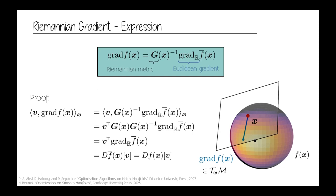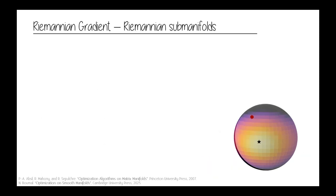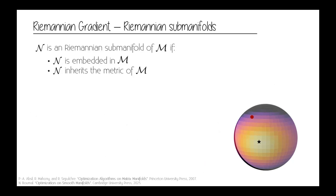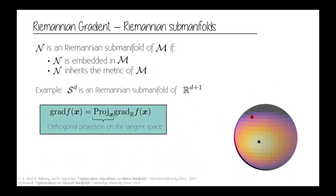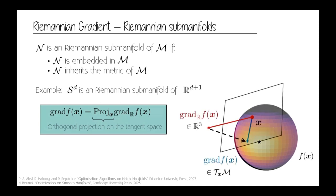There is one case where computing the gradient is even simpler: Riemannian submanifolds. These are manifolds embedded in another Riemannian manifold, inheriting the ambient metric — for example the sphere S^2 embedded in R^3. In this case, the Riemannian gradient is simply the orthogonal projection of the Euclidean gradient onto the tangent space. For the sphere, this gives a very simple closed form.